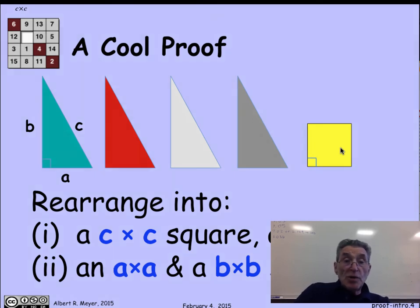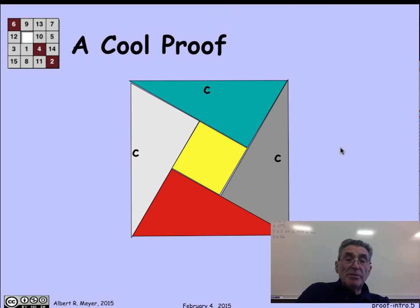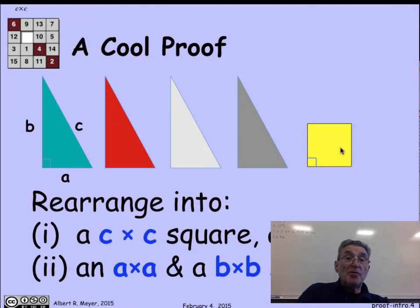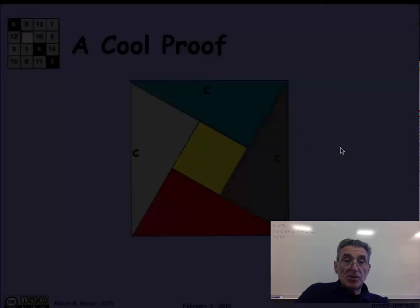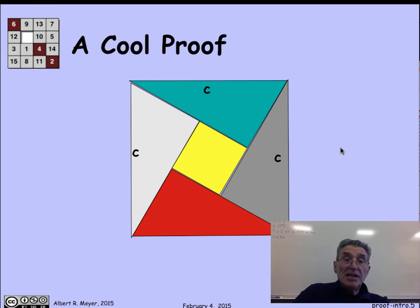Let's look at those rearrangements. Probably you should take a moment to try it yourself before I pop the solution up. But there's the solution to the first one—it's the easier of the two. This is the c by c arrangement. The hint is that if it's going to be c by c, you don't have a lot of choice except to put the c long hypotenuses on the outside. Then it's a matter of fiddling the triangles around so they fit together, and you discover there's a square in the middle, and that's where that extra square will fit.